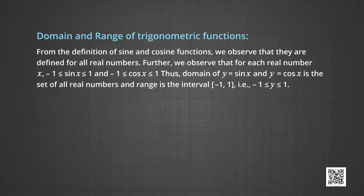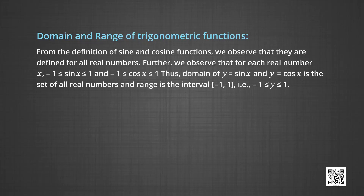From the definition of sin and cosine functions, we observe that they are defined for all real numbers. Further, for each real number x, minus 1 is less than or equal to sin x is less than or equal to 1, and minus 1 is less than or equal to cos x is less than or equal to 1. Thus, the domain of y = sin x and y = cos x is the set of all real numbers, and the range is the closed interval minus 1 to 1.